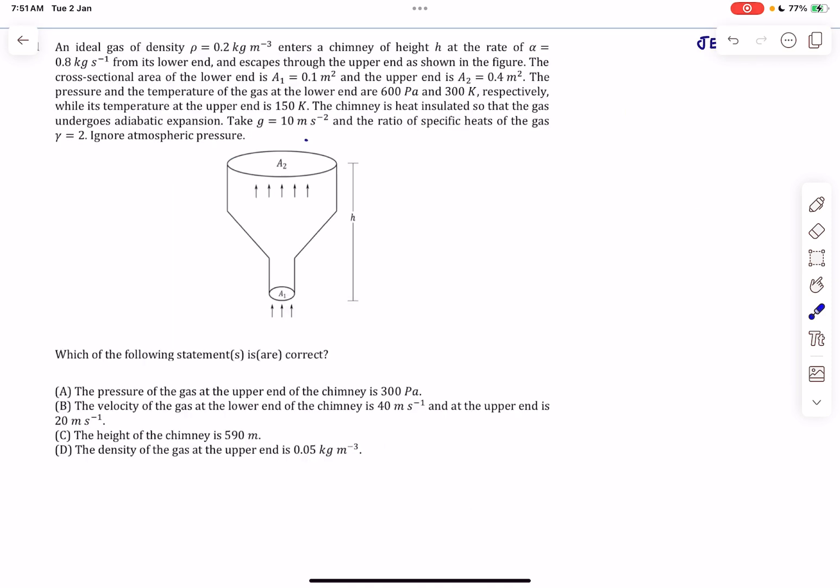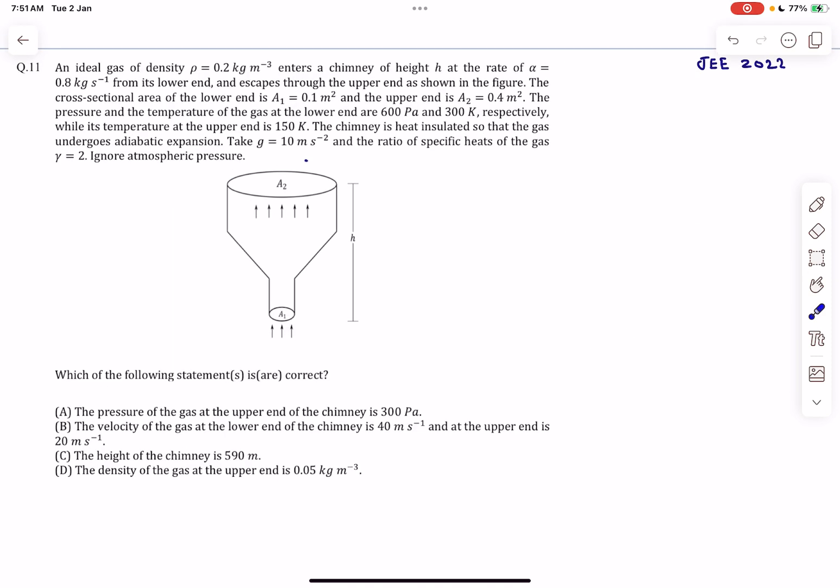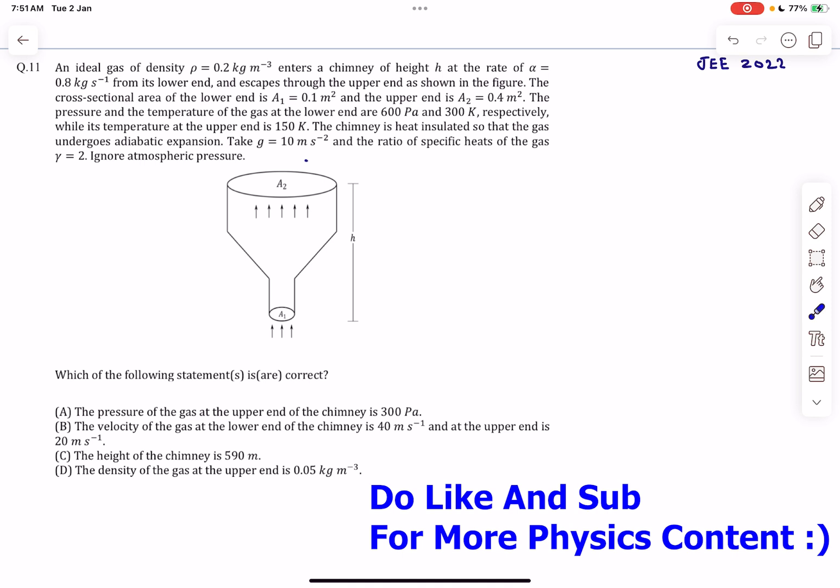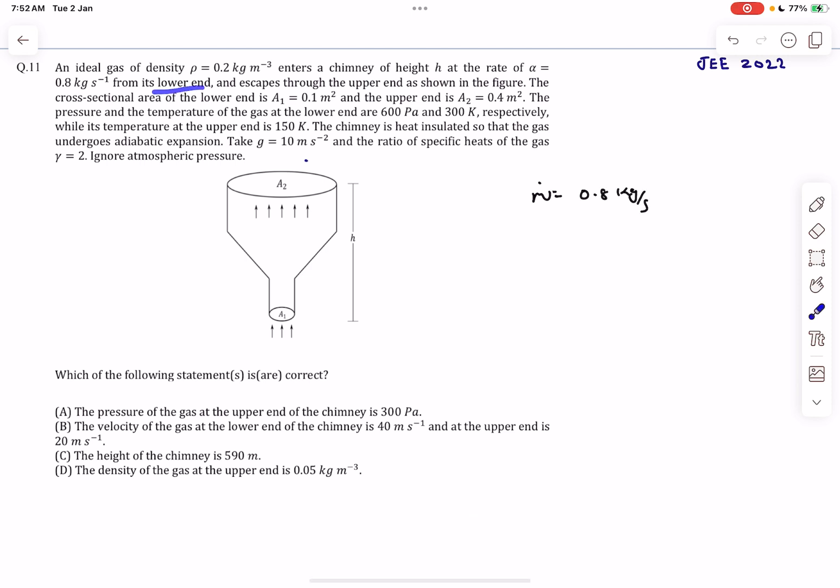Let's read the problem statement. We have an ideal gas whose density is 0.2 kg/m³ at the inlet. It enters the chimney whose height is h at a rate of 0.8 kg/s - that's the mass flow rate - from its lower end and escapes through the upper end as shown in the figure.